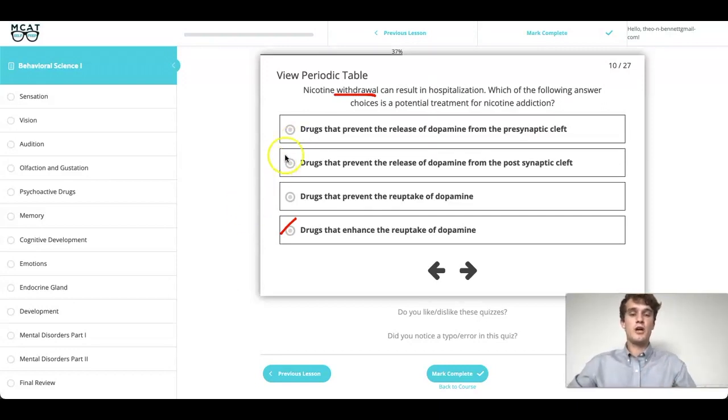Also, we need a drug that will increase dopamine. And so, we don't want to prevent the release of dopamine like A or B. In fact, dopamine's actually only going to be released from the presynaptic cleft and not from the postsynaptic. So, that leaves us with C, which would be our answer.